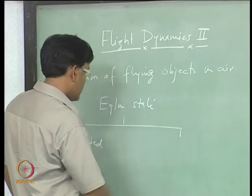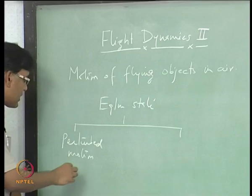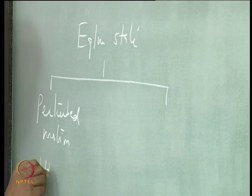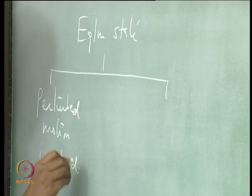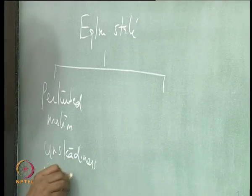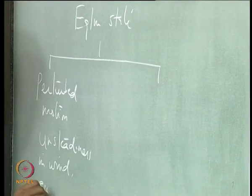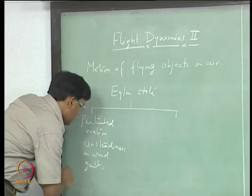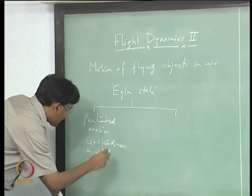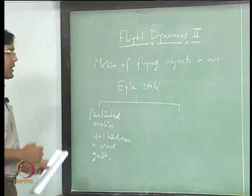This perturbed motion is introduced because of unsteadiness in wind or several wind conditions — for example, a gust or a different wind condition which is suddenly encountered.